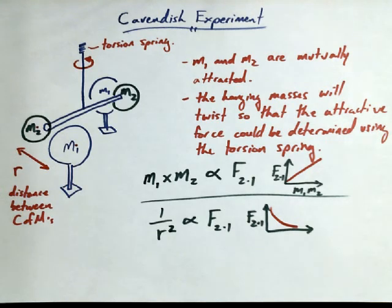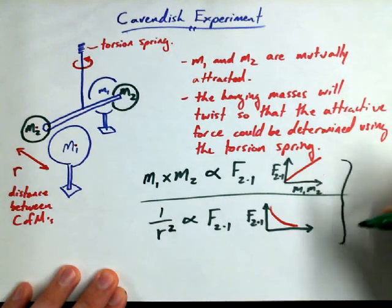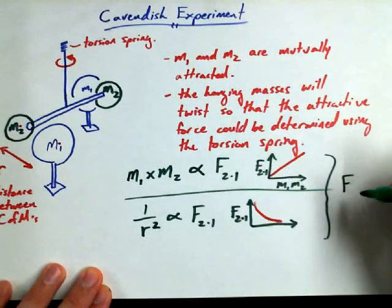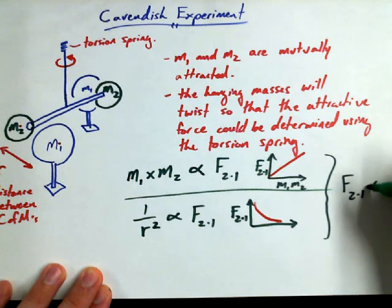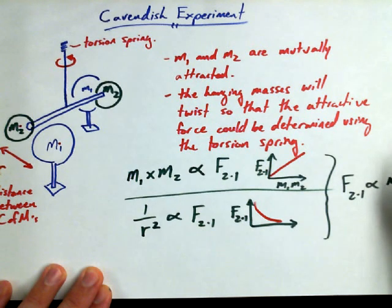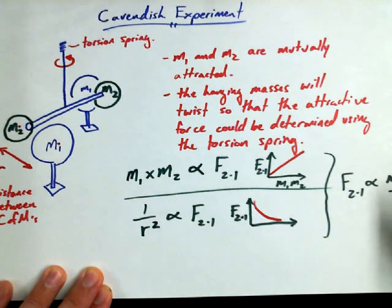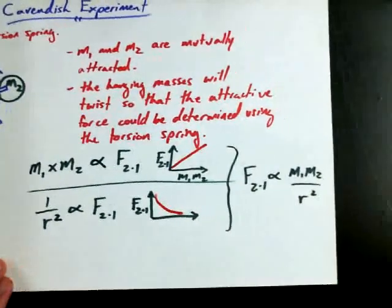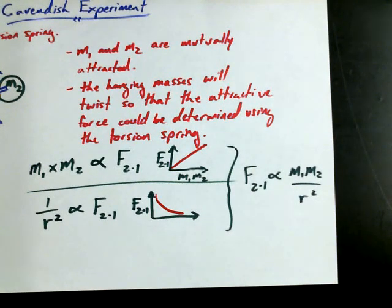Cavendish's experiment and the inverse square law and the product, that is the multiplication of mass one times mass two being proportional to force, to gravity, actually turns out that if you mash these guys together, force of two acting on one is proportional to mass one mass two over r squared. Notice I'm being very careful not to say equal to. Proportional to. Because we're not at equal to yet.